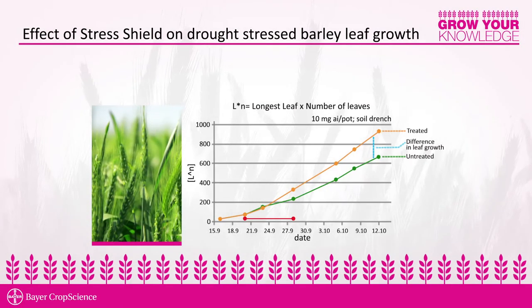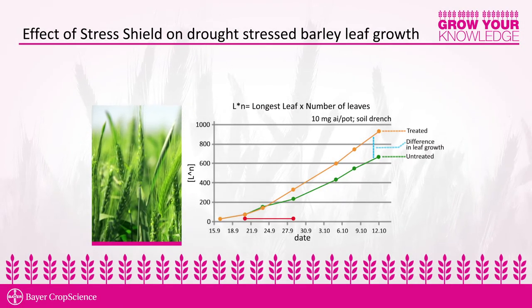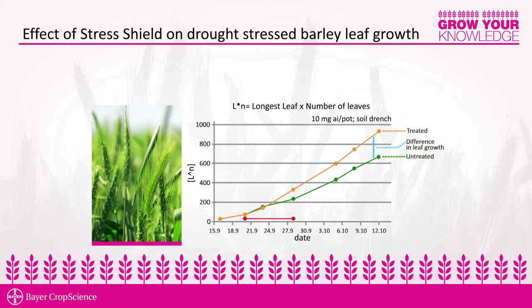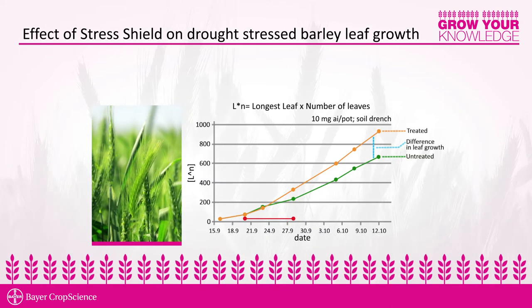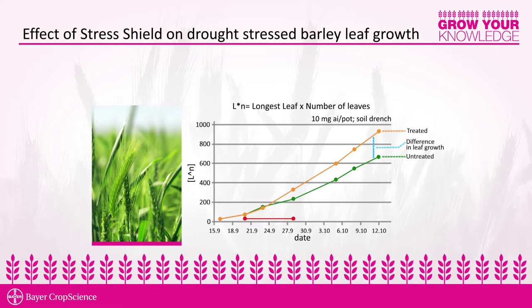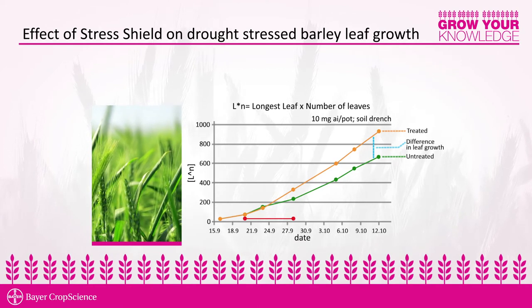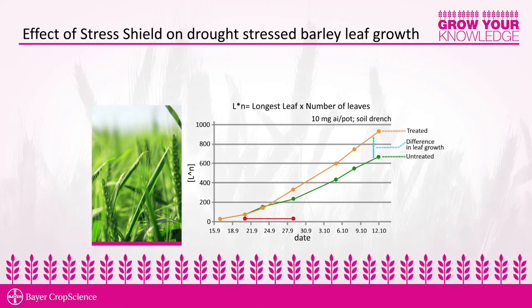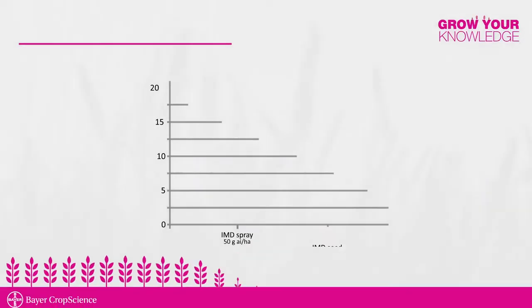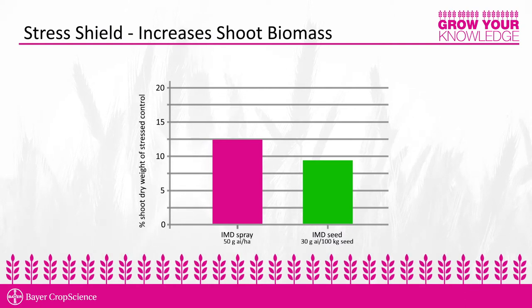Stress Shield has been shown to have a benefit on drought-stressed cereal plants. In drought experiments with Stress Shield on wheat and barley, we observed in barley that leaf length was increased with Stress Shield-treated barley versus untreated barley. In harvested wheat, we observed an increase in dry shoot weight with Stress Shield-treated wheat versus non-Stress Shield-treated wheat.